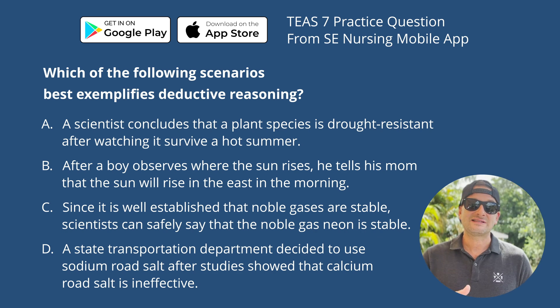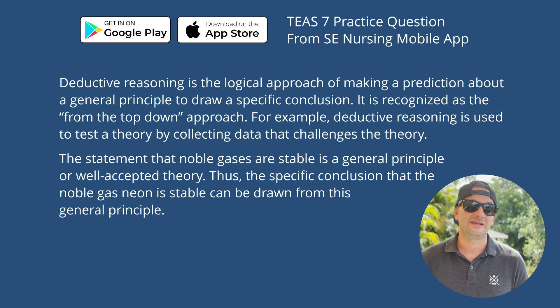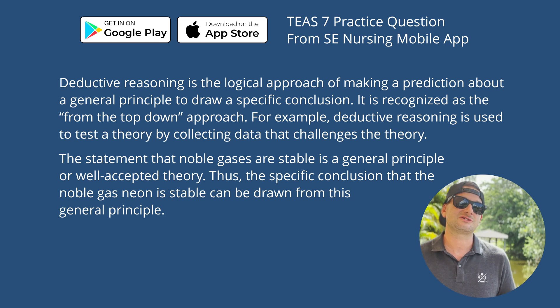The correct answer is C. Since it is well established that noble gases are stable, scientists can safely say that the noble gas neon is stable. Deductive reasoning involves drawing scientific conclusions from general principles or premises. In this scenario, the stability of noble gases is the general principle, and the conclusion about neon's stability logically flows from it.